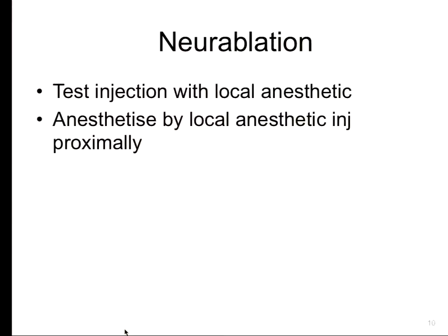The way to do that is: you definitely want to do a test injection with local anesthetic in order to ensure that the origin of pain is actually the neuroma. Once you have made the diagnosis, the next step is to do a radiofrequency ablation. Prior to doing the radiofrequency ablation, you always want to block the nerve proximal to the neuroma so that introduction of the needle into the neuroma doesn't cause too much pain.